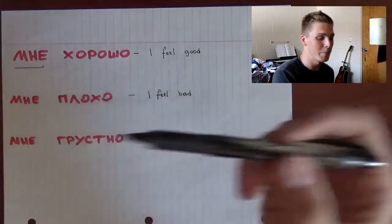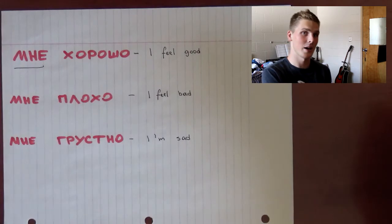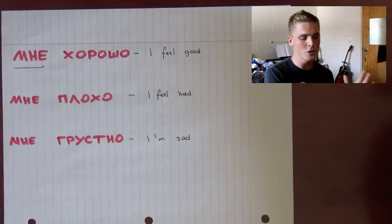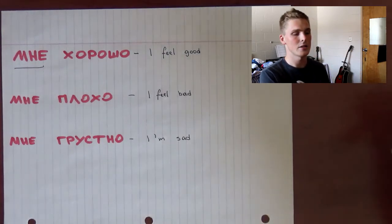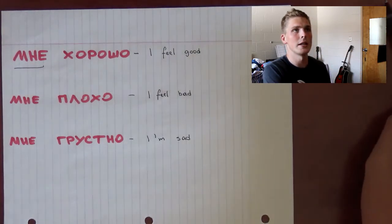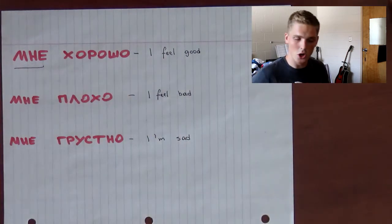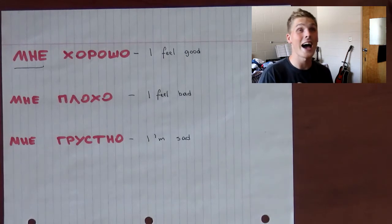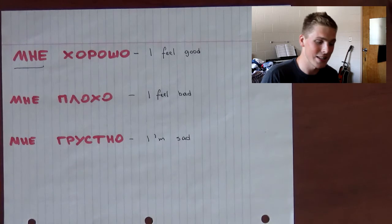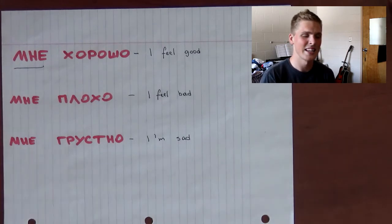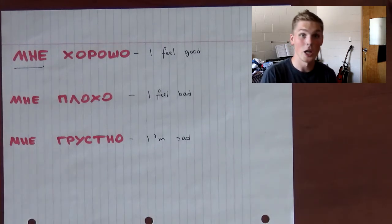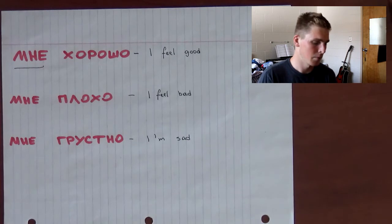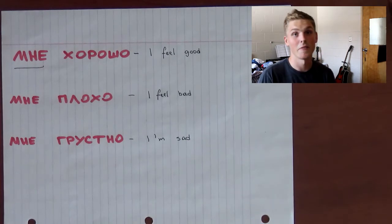The second one is МНЕ плохо — it's the opposite of МНЕ хорошо, so it means I feel bad. But in Russian we mostly use it to describe a physical state — like when you feel sick, your stomach hurts, your head hurts. It's not 'I feel bad' in the sense of regretting something. МНЕ плохо means I feel bad physically, I feel sick.